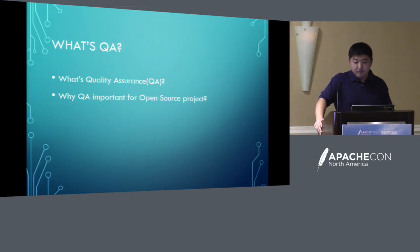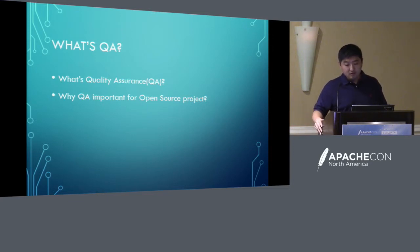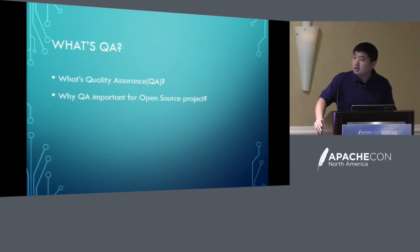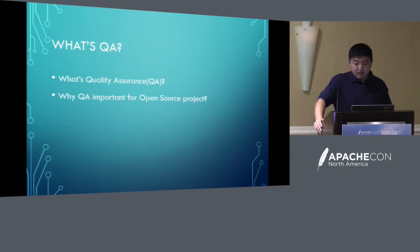What's QA? I think most software developers or engineers are very familiar with this term. QA is short for quality assurance. It's a way of preventing mistakes or defects in manufactured products and avoiding problems when delivering solutions or services to customers. The ISO 9000 defines it as part of quality management focused on providing confidence that quality requirements will be fulfilled.